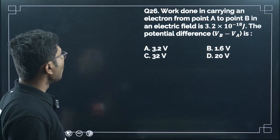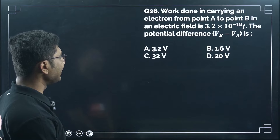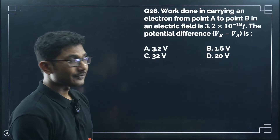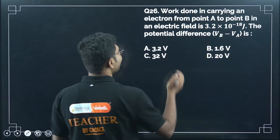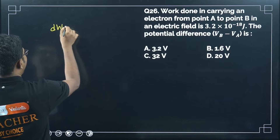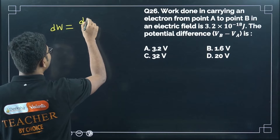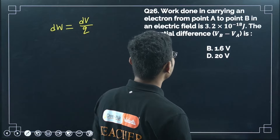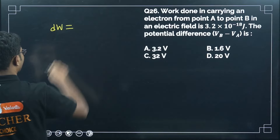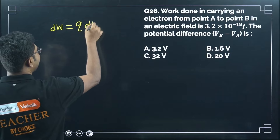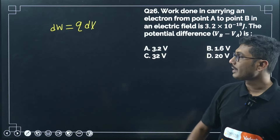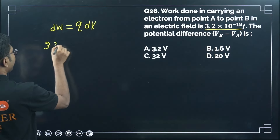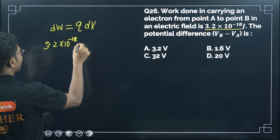Question 26: work done in carrying an electron from point A to point B is 3.2×10⁻¹⁸ joules. Find the potential difference. Work done is related to charge by W = Q·ΔV, so ΔV = W/Q. The charge of an electron is 1.6×10⁻¹⁹ C. We need to calculate the potential difference from this relationship.